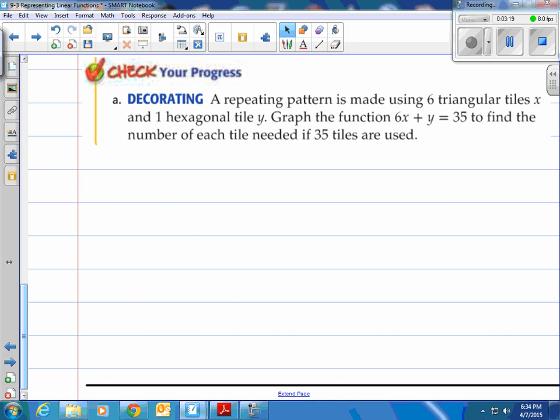All right, that was quick but why don't you try it here. You're going to need to make a table and make a graph. So you're going to need to create a table on paper and then also you know half graph paper or create a little graph of your own. So here it is. A repeating pattern is made using six triangular tiles x and one rectangular tile y. Graph the function 6x plus y equals 35 to find the number of each tile needed if 35 tiles are used. So if you're going to use 35 tiles and use this pattern that's what the function would look like. 6x plus y equals 35.